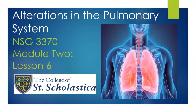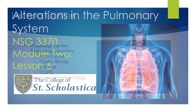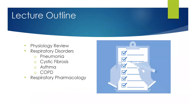Hello everybody, and welcome to Nursing 3370, Module 2, Lesson 6: Alterations in the Pulmonary System. In this lesson, we will briefly overview the physiology of the pulmonary system, then look at a variety of different pulmonary disorders, including pneumonia, cystic fibrosis, asthma, and COPD. We will then discuss the appropriate pharmacology used to treat these different pulmonology disorders.